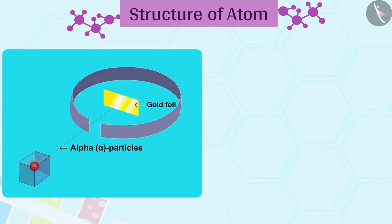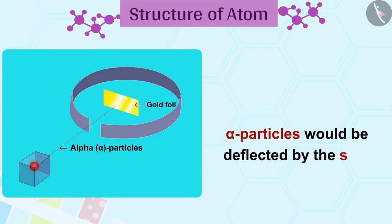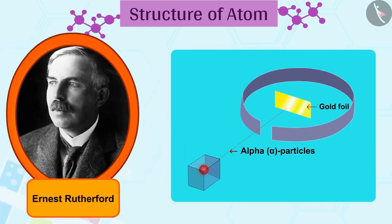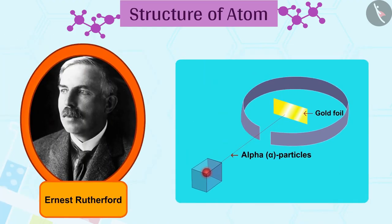3. It was expected that alpha particles would be deflected by the subatomic particles in the gold atoms. Since the alpha particles were much heavier than the protons, he did not expect to see large deflections.